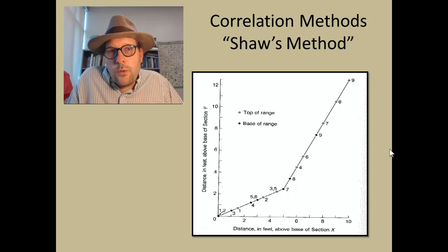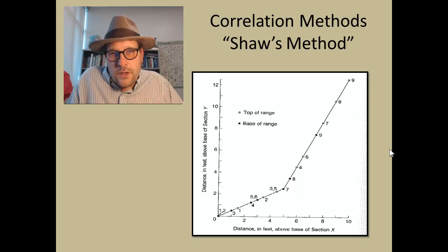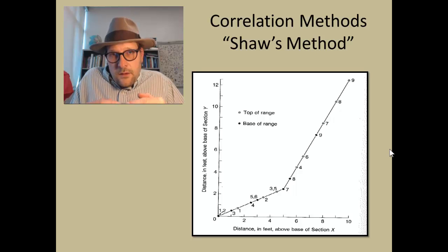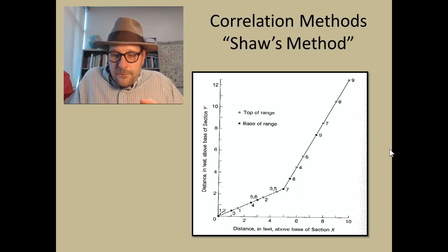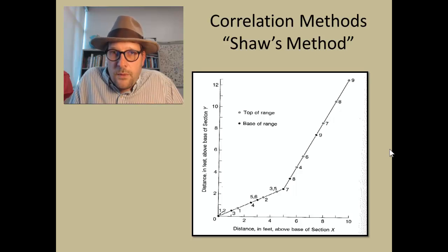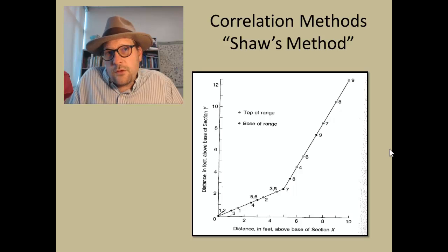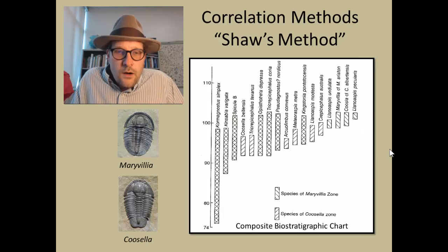This is really important in sequence stratigraphy, where you are looking for unconformities that might exist and looking for boundary surfaces. The graphic correlation method is a great way to do this using biostratigraphy and fossils.